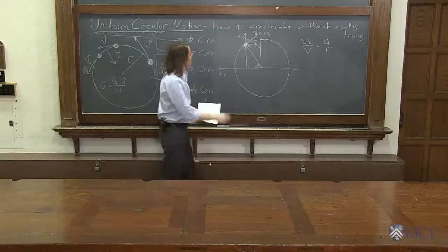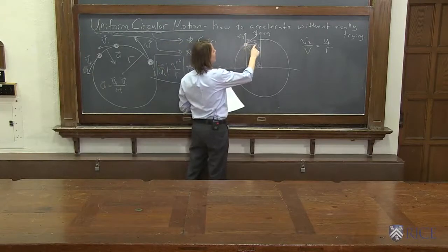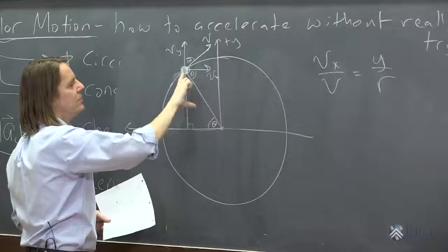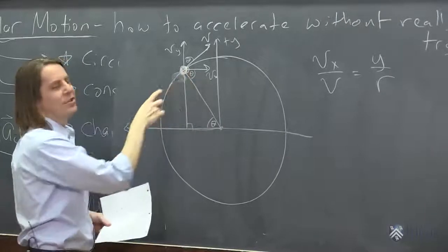So we could say something like the x component of the velocity is to the velocity as the y component of the position is to the radius. What? Let's see, does that make sense? So the x component of the velocity is to the total velocity as the y is to the radius. See how those are similar? I should have done the other one first.